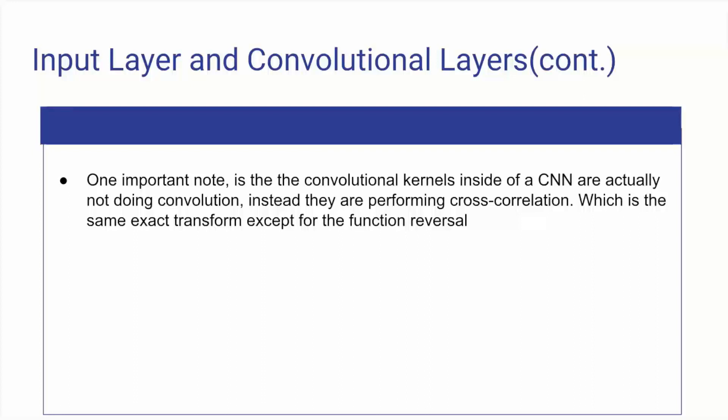So one important note is the convolutional kernels inside the CNN are actually not doing the convolution. They are doing a very similar thing, essentially the same exact thing, except in one of the transformations we don't have the function reversal. So we're not doing a transposition of the function in the cross-correlation of one of the functions. That's essentially the only difference. Convolutional is sort of a misnomer by that measure. But, you know, cross-correlation network doesn't sound too great. But just remember, fundamentally, we perform a cross-correlation on the image data, we're not doing convolution.